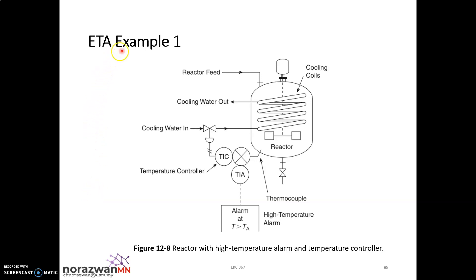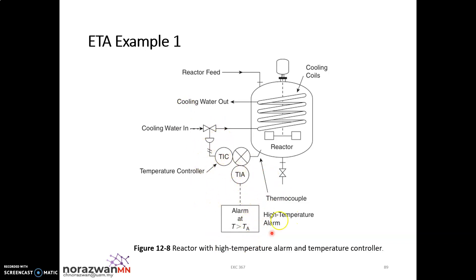This figure shows a reactor with a high temperature alarm and temperature controller. You need to understand what your diagram is about. This diagram has a high temperature alarm system and also a temperature controller. You have your thermocouple, your alarm, and your controller — TIC is for your controller and TIA is your alarm system — so you have both temperature alarm and temperature controller inside your reactor.